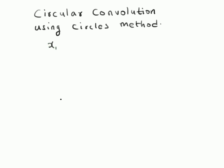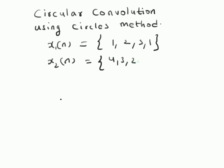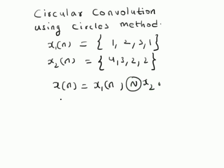Given two sequences: x1(n) is for example one, two, three, one; and x2(n), a second sequence of the same length, is four, three, two, two. The circular convolution of these two sequences is represented as x(n) = x1(n) circular convolution with x2(n). Given these two sequences, we have to find the circular convolution sequence.